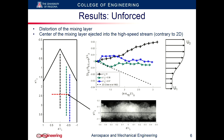It was discovered that the mixing layer was distorted. We can see the locations of the center of the mixing layer, designated by the average of the two streams, vary for each spanwise location. For a 2D mixing layer, vortex induction from the high speed side induces a downward motion and the mixing layer would be inclined towards the low speed stream.